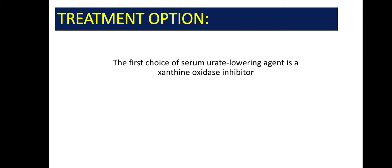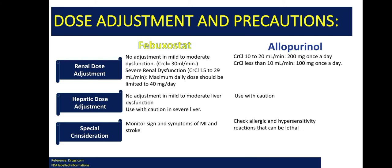There are some points to keep in mind when prescribing febuxostat or allopurinol. There will be no renal dose adjustment needed for febuxostat if the patient has a creatinine clearance greater than 30 mL/min. But if creatinine clearance is between 15 to 29, the maximum daily dose should be limited to 40 mg per day. For allopurinol, if creatinine clearance is 10 to 20 mL/min, then 200 mg once a day is given; and if creatinine clearance is less than 10 mL/min, the dosage should be 100 mg once a day.